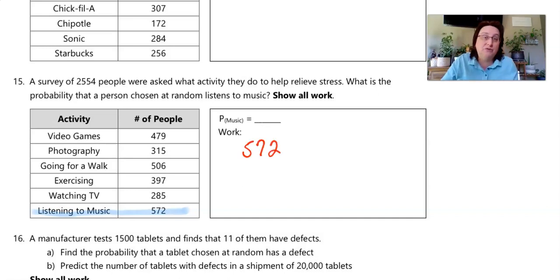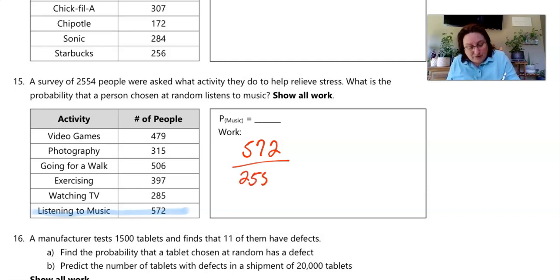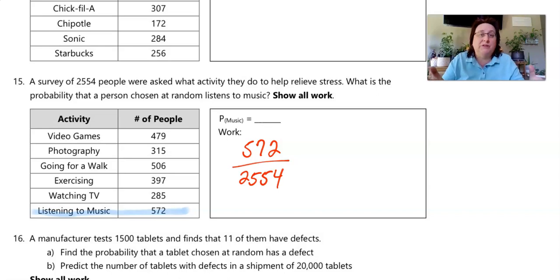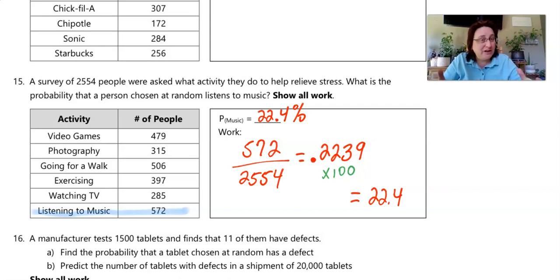Looking at the table for listening to music: 572 people listed that activity. So if a person is chosen at random, there are 572 people out of a total of 2,554. To find the probability as a percentage, divide 572 by 2,554 and multiply by 100, which gives us 22.4%. There is a 22.4% chance that a randomly chosen person listens to music to relax.